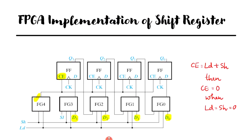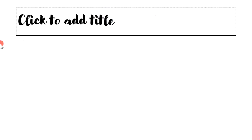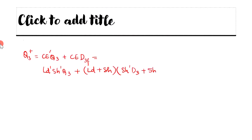Now, if we are to rewrite the equations of the shift register, that is parallel in parallel out shift register, then we can write the equations as Q3 plus to be equal to CE dash Q3 plus CE D3F, that is equal to LD dash SH dash Q3 plus LD plus SH into SH dash D3 plus SH into SI. So this particular term that you see here, D3F, this term D3F corresponds to the D input to the flip-flop 3.